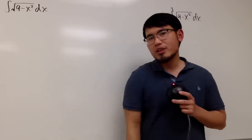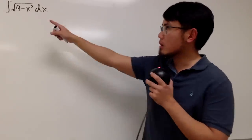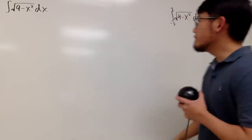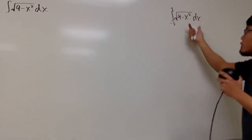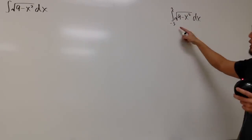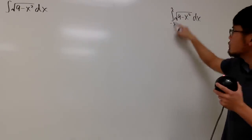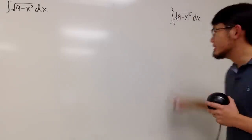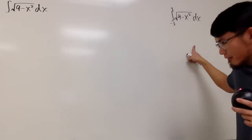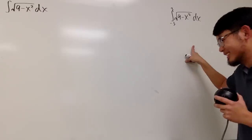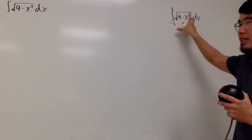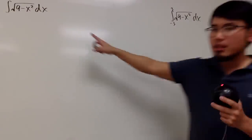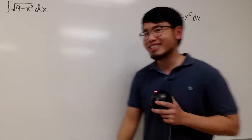We have two integrals right here. The first one is the integral of square root of 9 minus x squared. For the second one, we pretty much have the same thing, but we go from negative 3 to positive 3. This right here is in fact so much easier — that's why I only give it a little space. This right here will take us some time.